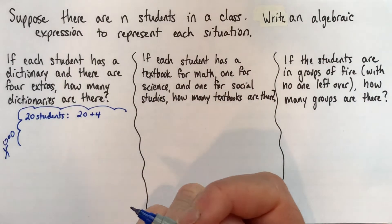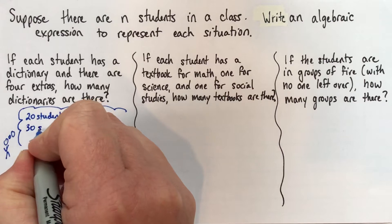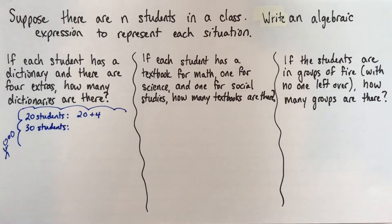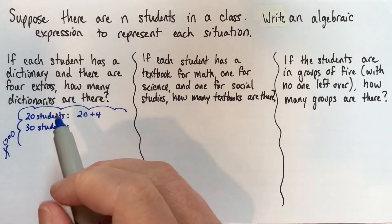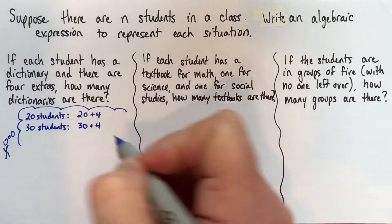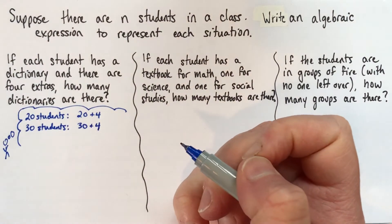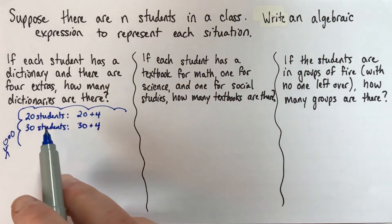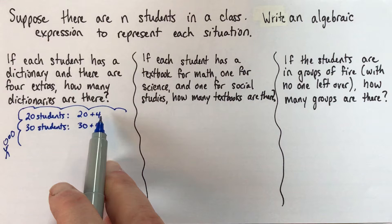Now suppose we had a different number of students — suppose we had 30 students. How would we figure out how many dictionaries there'd be? Well, each student has one, so that's 30, and there are four more, so we do 30 plus 4. If we just look for a pattern here, what are we doing? We're taking the number of students and adding 4 to it.